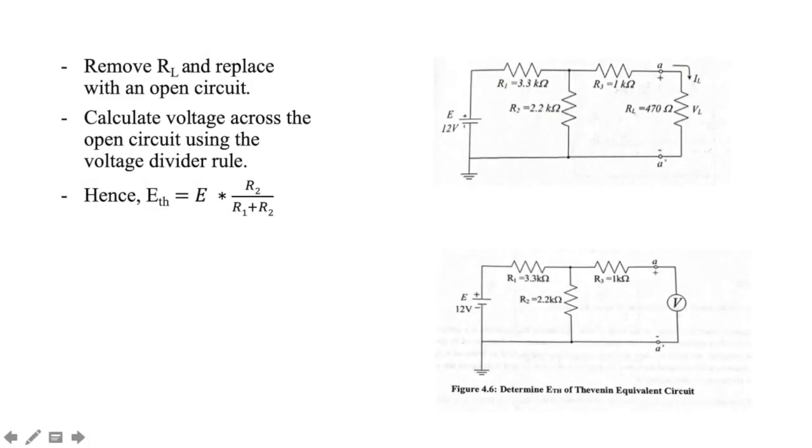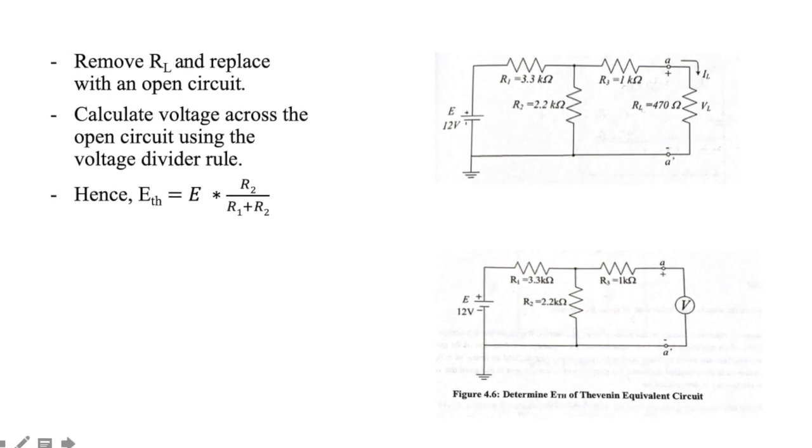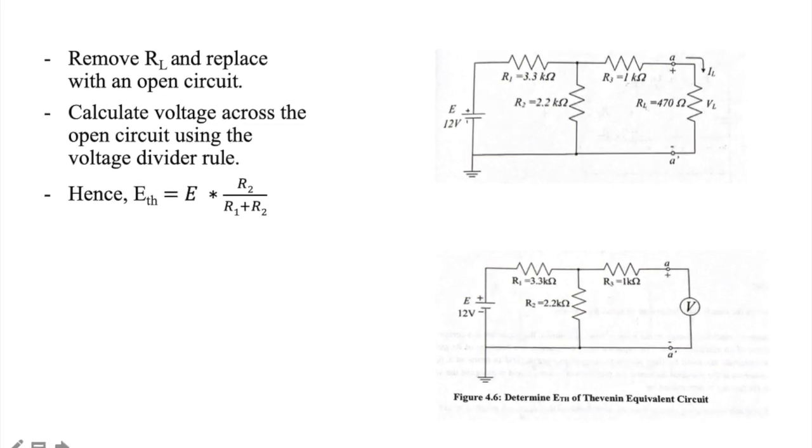Here is an example from experiment 4 that shows how a Thevenin equivalent circuit is calculated. First, remove RL and replace it with an open circuit.